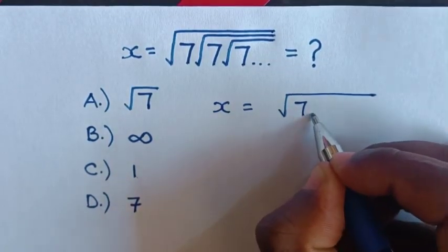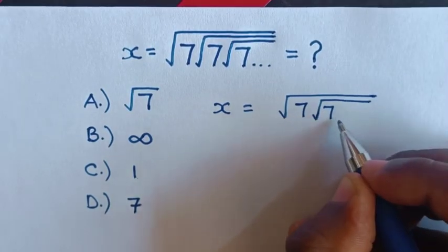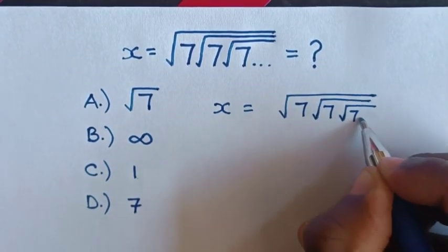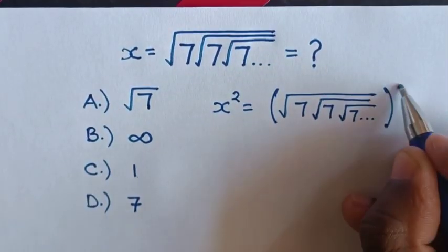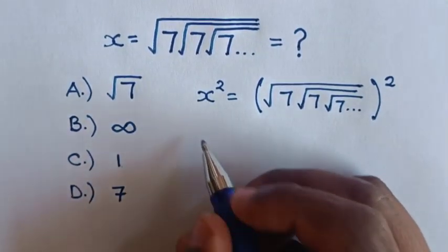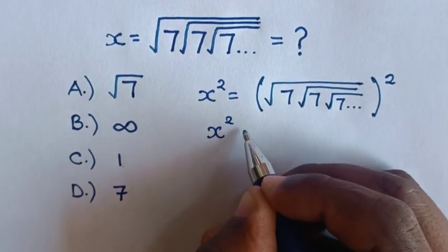So x equals this expression, which is square root of 7, square root of 7, square root of 7, infinitely. When we square both sides, x squared equals...